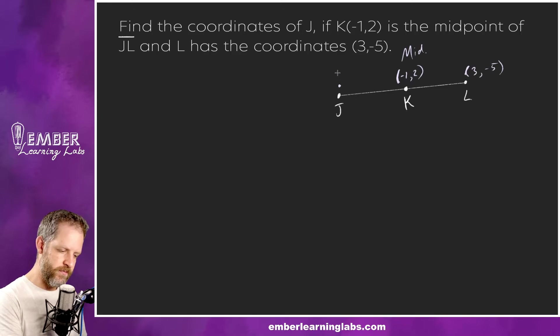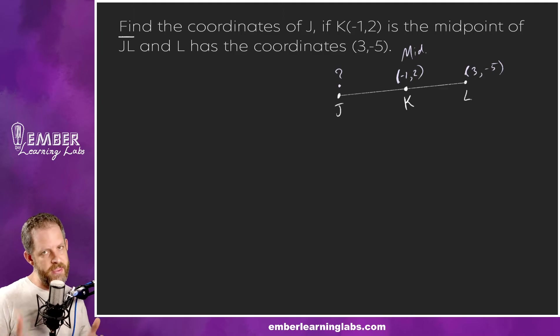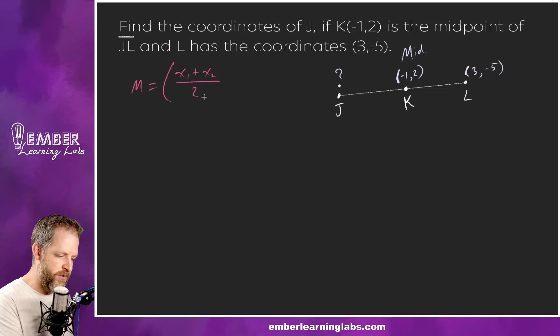And L has the coordinates three, negative five, right? And we're looking for J. So this is setting up a little bit different. So just like I said in the last video, we're often going to look at the geometry and understand the geometry and use that to set up an algebraic equation to solve for whatever we're missing. Same plan here. In this case the midpoint formula is M equals x1 plus x2 over 2 and y1 plus y2 over 2.